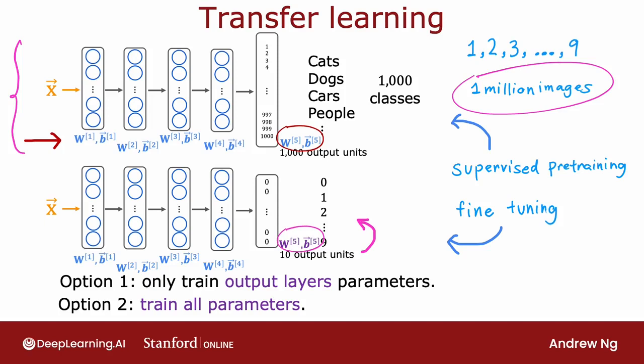Downloading a pre-trained model that someone else has trained and provided for free is one of those techniques where by building on each other's work in the machine learning community, we can all get much better results by the generosity of other researchers that have pre-trained and posted their neural networks online.